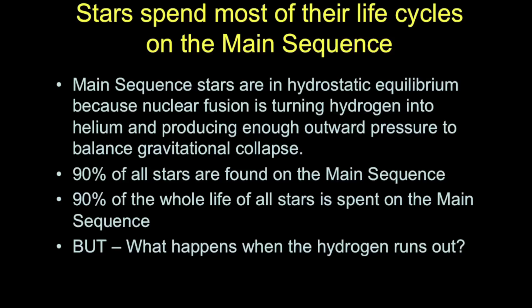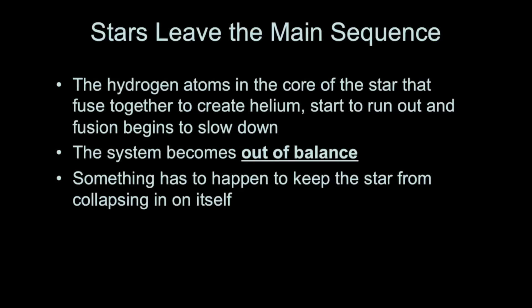When the hydrogen fuel in the core runs out, the star is no longer a main sequence star and becomes something else. When a star leaves the main sequence — finishing its hydrogen fuel for nuclear reactions — it becomes out of balance. There is no longer sustained energy generation to counteract the crushing force of gravity, and eventually something has to keep the star from collapsing in on itself.